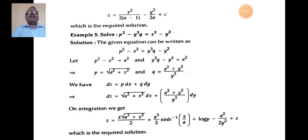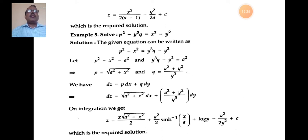In this way we find the solution of differential equations of the type f(x, p) = g(q, y). The major steps are: first, express the equation in the form f(x, p) = g(y, q); substitute equal to a; express p in terms of x and a, and q in terms of y and a; then substitute in dz = p dx + q dy and integrate to get the complete solution. These are problems related to the third type f1(p, x) = f2(q, y). Thank you.